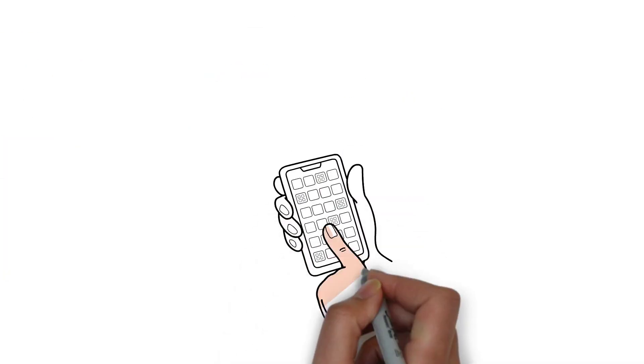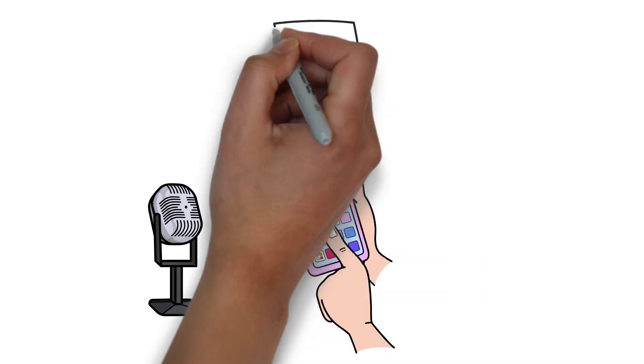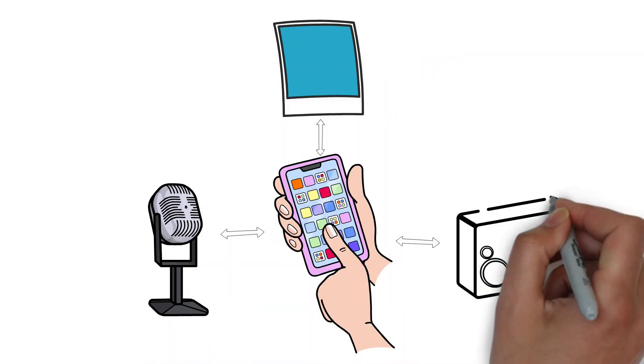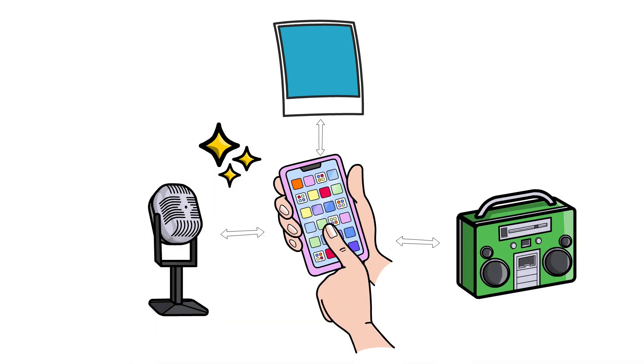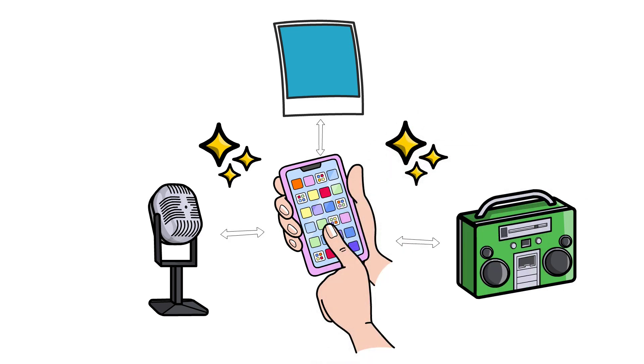You talked to your phone, and it understood you perfectly. You took a photo, and it instantly knew who was in it. Your music app somehow knew exactly what song you'd want to hear next. This isn't magic. It's artificial intelligence, and by the end of these five minutes, you'll understand how this digital wizardry actually works.